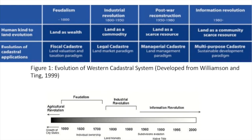In the first phase, feudalism, people used to serve under lords or kings as servants. From the beginning to around 1000 AD, land was thought of as wealth and was used for fiscal purposes only — land valuation and taxation were the major concerns. After that, during the industrial revolution, land served as a commodity.